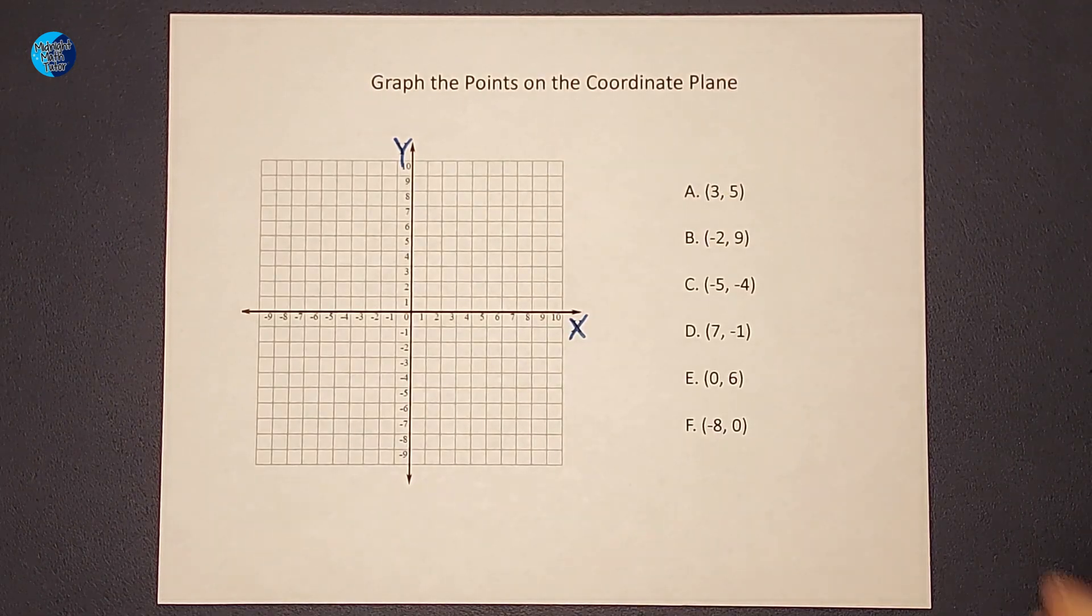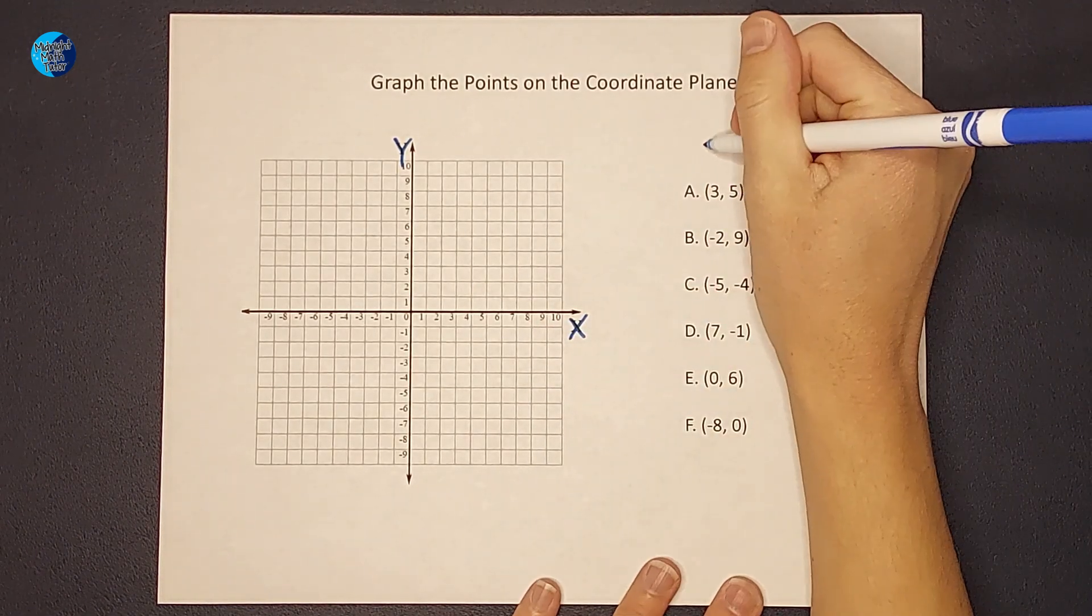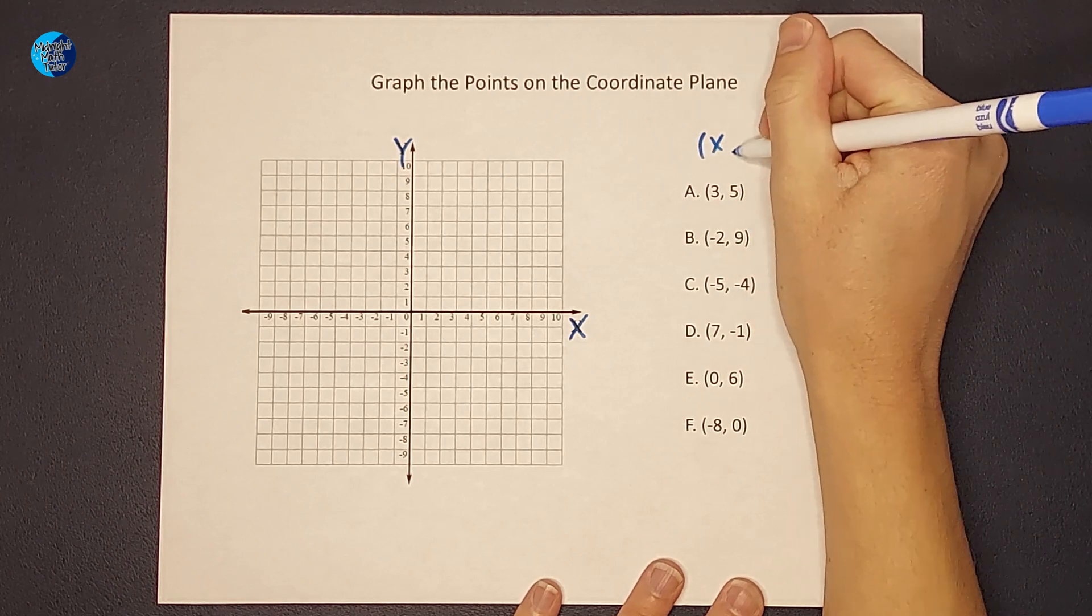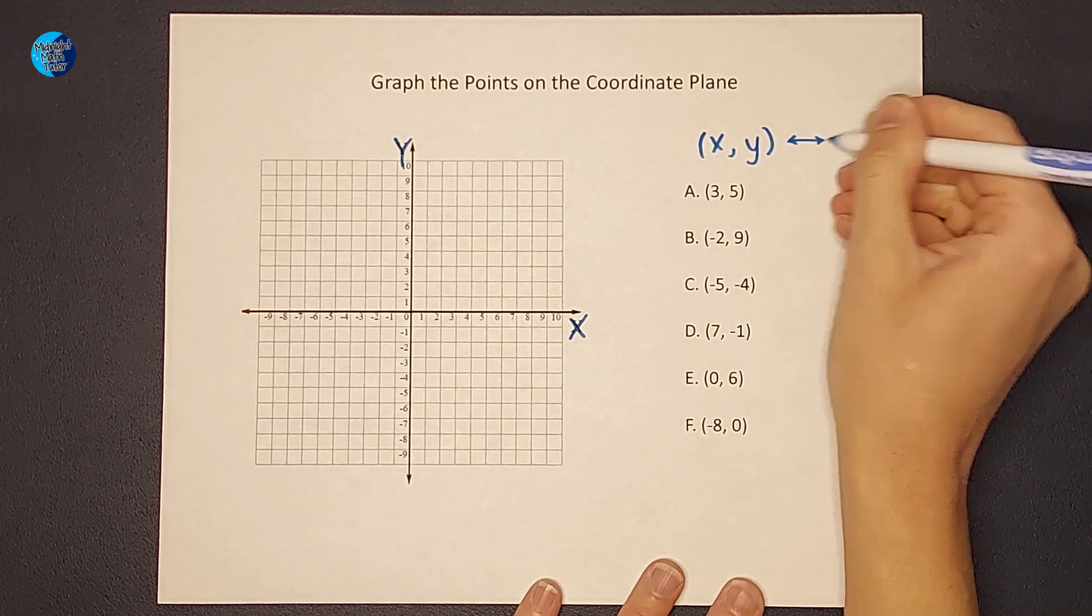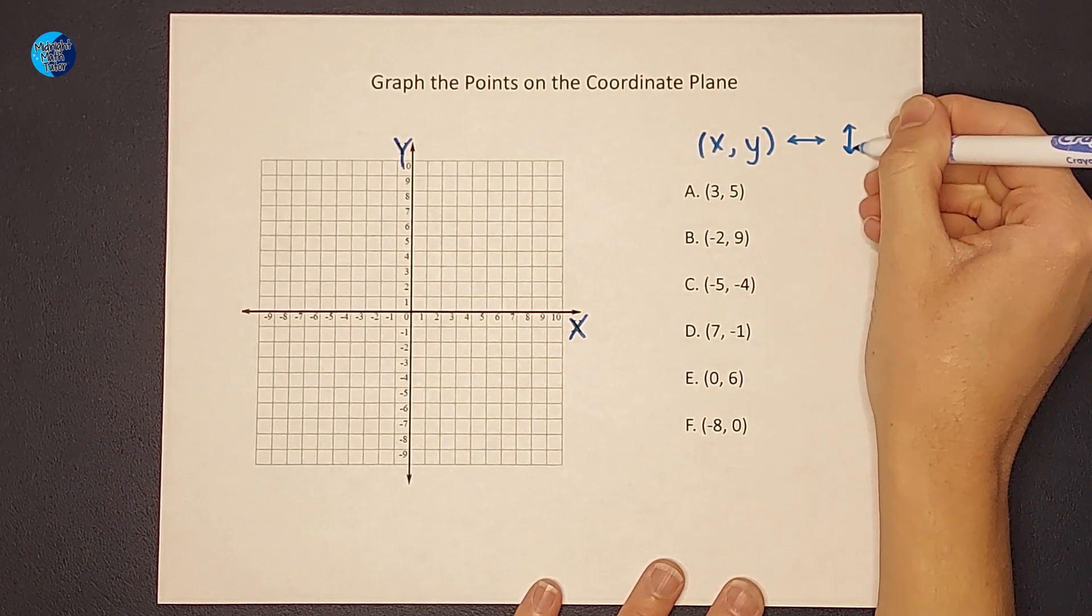So we need to remember that because these ordered pairs here they go x, y. Which basically just means I go left and right and then up and down.